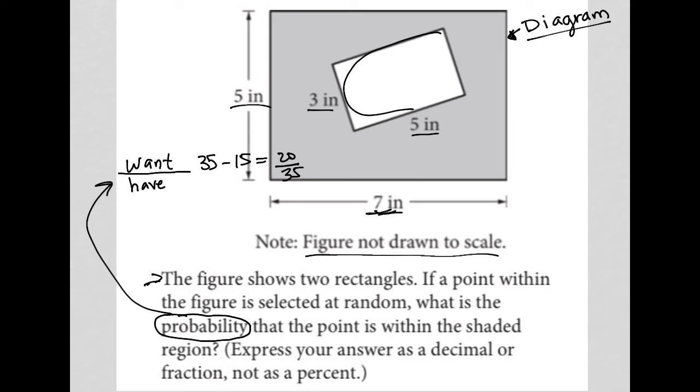So hopefully that makes sense, right? If you were throwing a dart at this figure and you hoped for that dart to land in the shaded region, let's say here, you know that first of all, you don't want it to be outside of here. So that gives you a bound of this rectangle, which is 7 by 5 or 35 square inches.